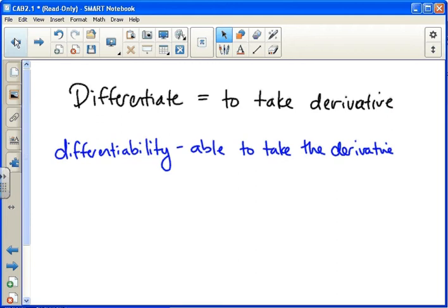So first of all, differentiate. Differentiate just means to take the derivative. So a problem may say take the derivative of this function, or it may just say differentiate this function. Differentiate is a verb, and it just means to take a derivative or take the derivative.